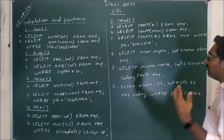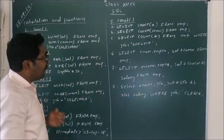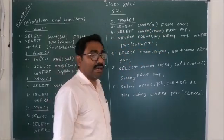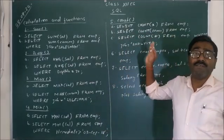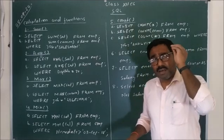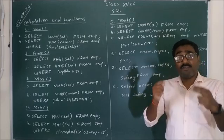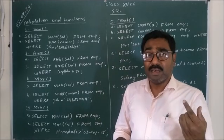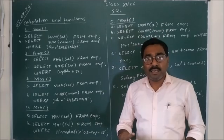You can also use COUNT with a WHERE condition. For example: SELECT COUNT(*) FROM EMP WHERE job = 'analyst'; Here it will first check the condition, and only count the rows where the job is analyst. In the EMP table, there are 3 analysts, so the result of this query will be 3. It counts 1 for each row where the condition is satisfied.